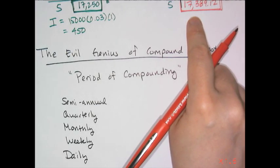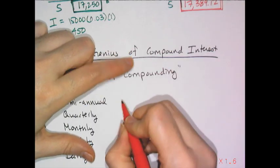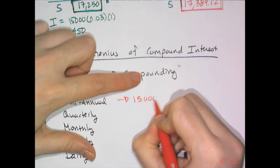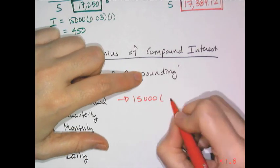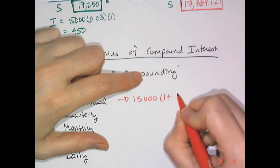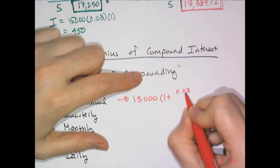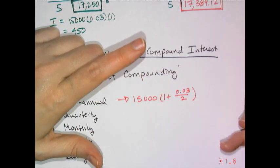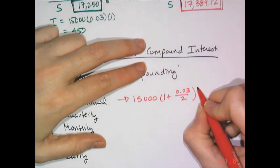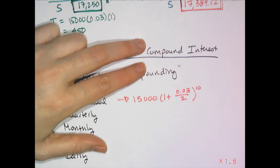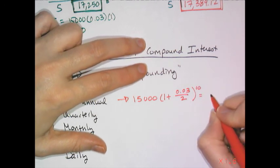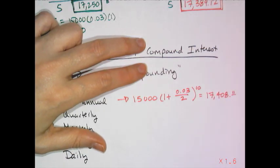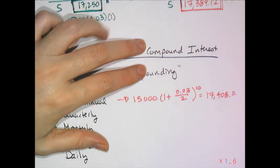For semi-annually: take $15,000, divide the interest rate by 2, and since interest is calculated twice a year for 5 years, raise to the 10th power. That gives $17,408.11 — already a little more than the annually compounded $17,389.12.